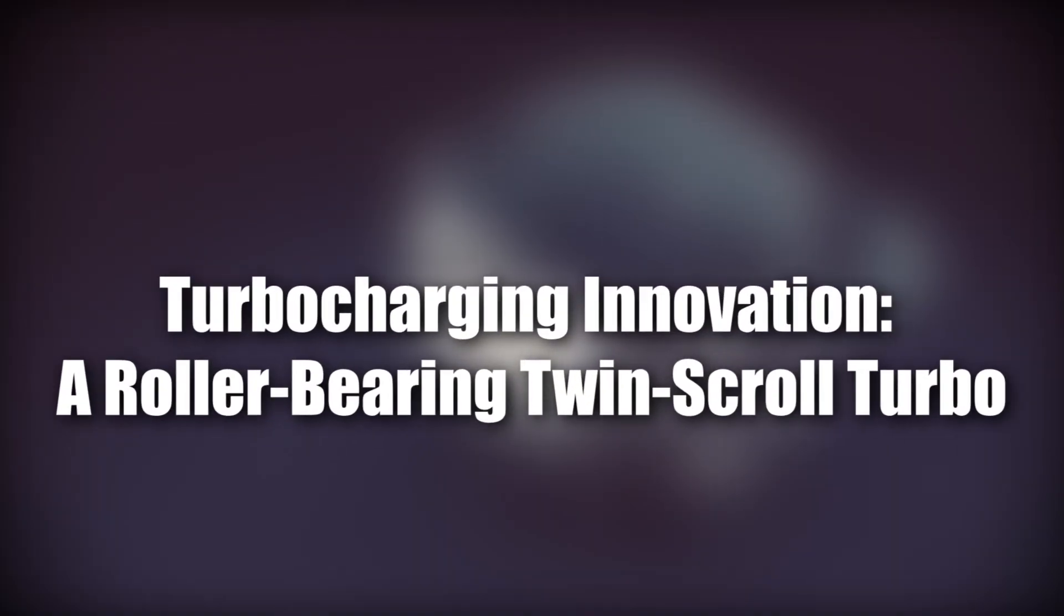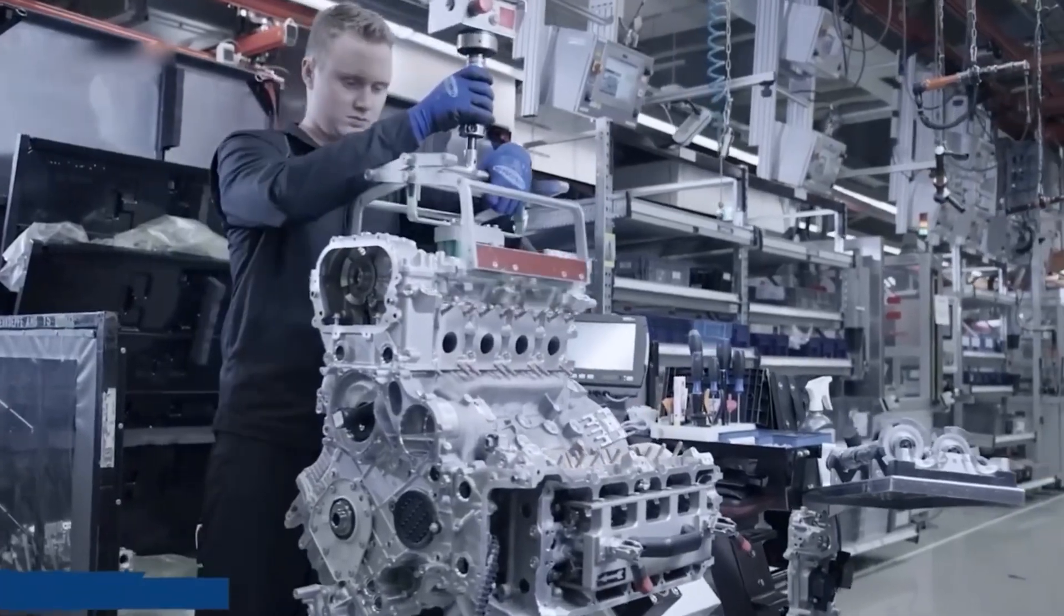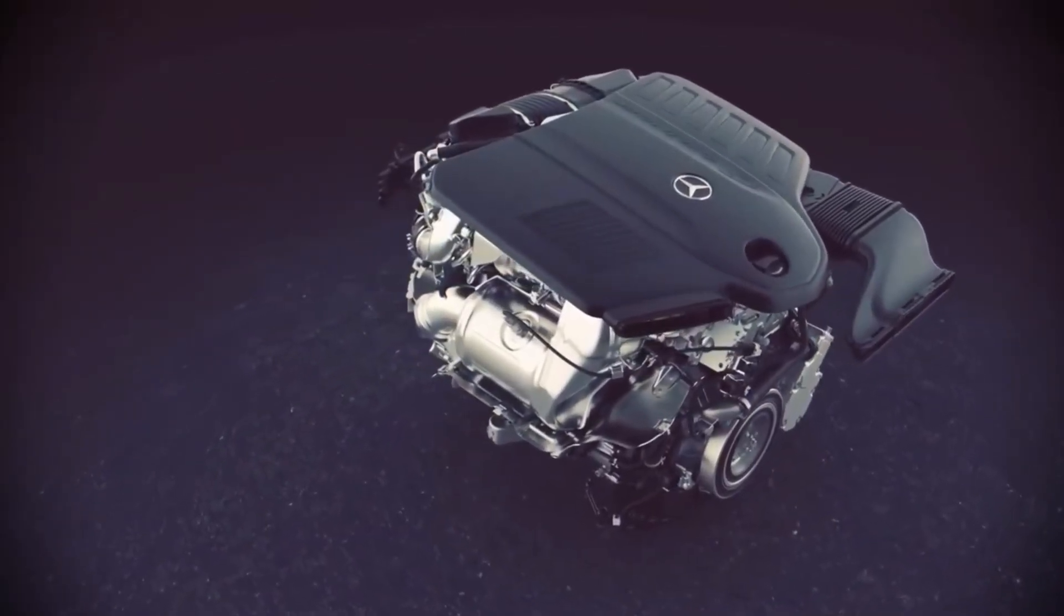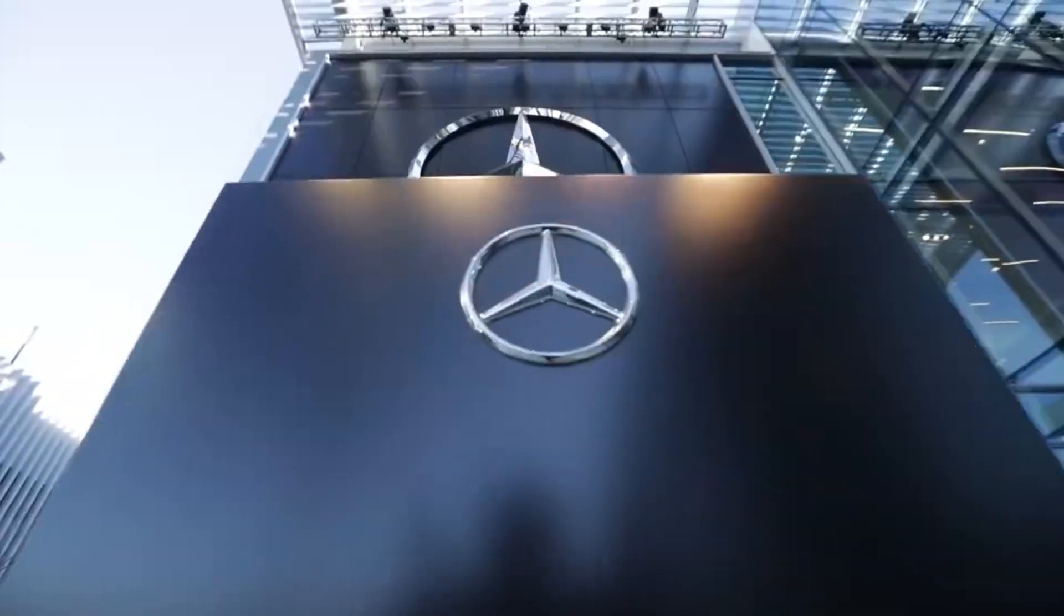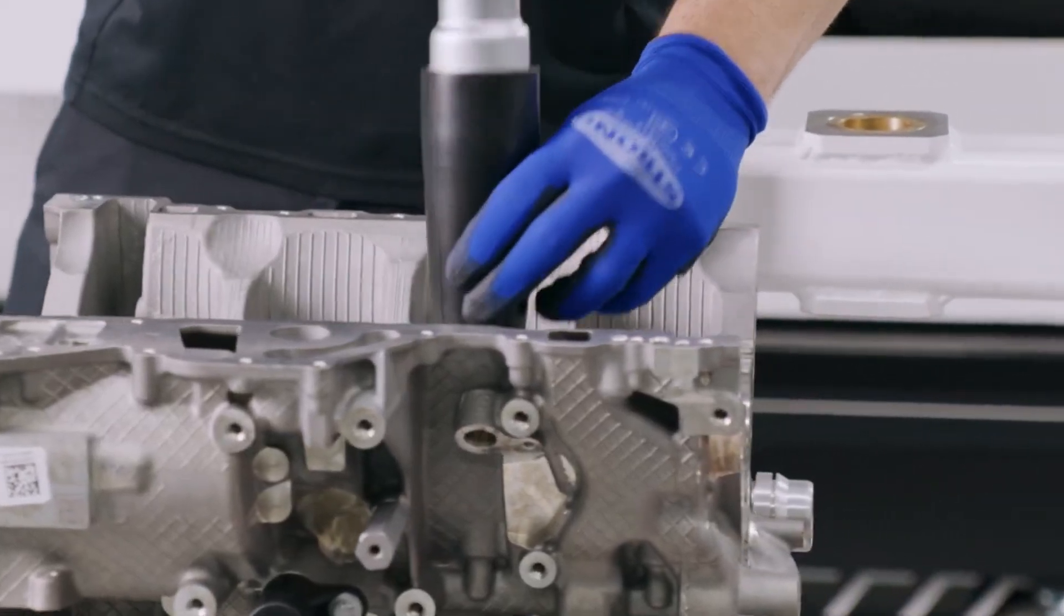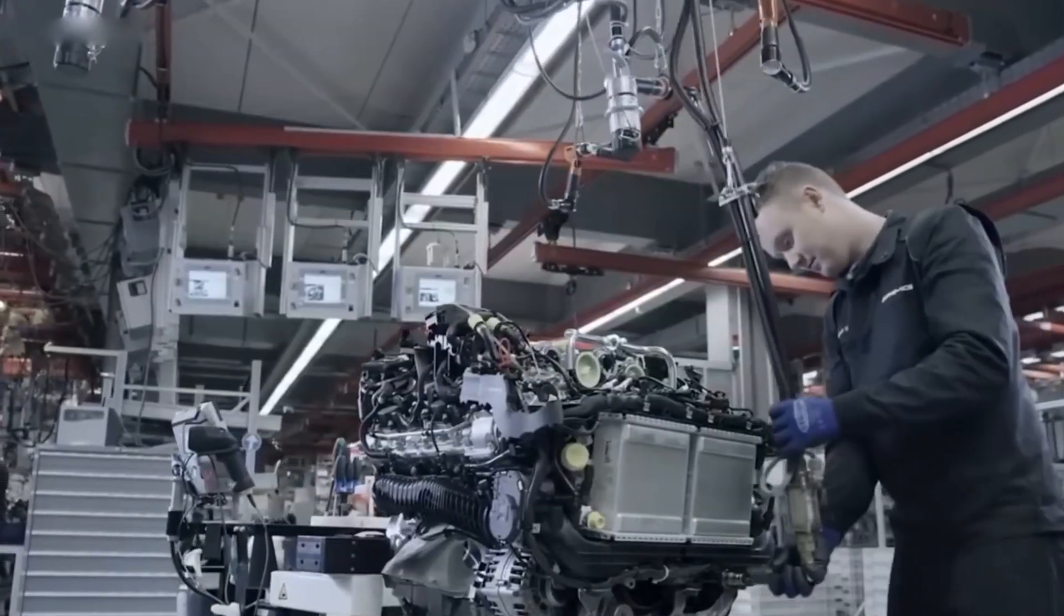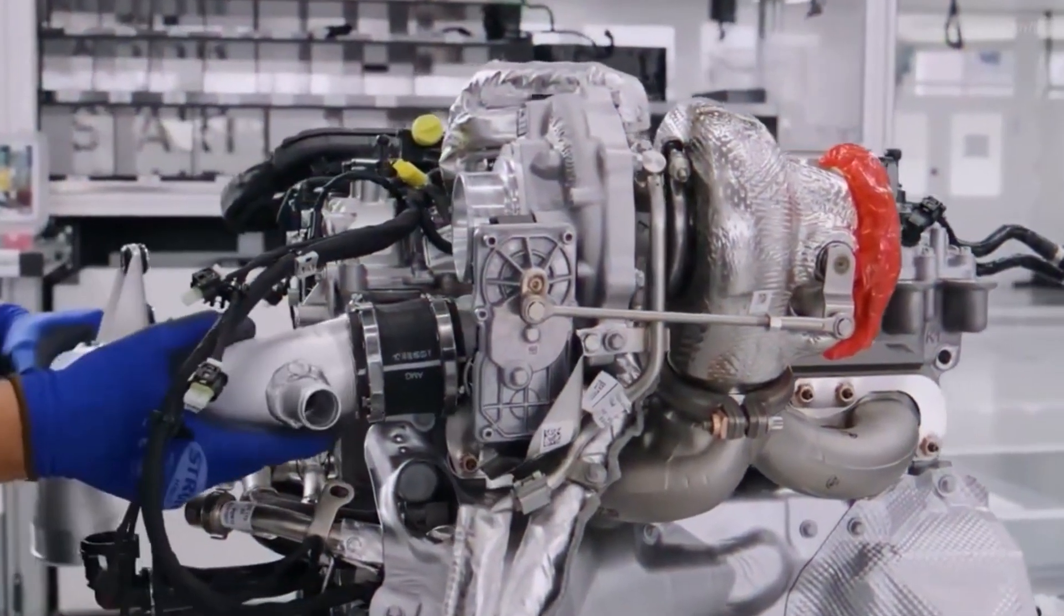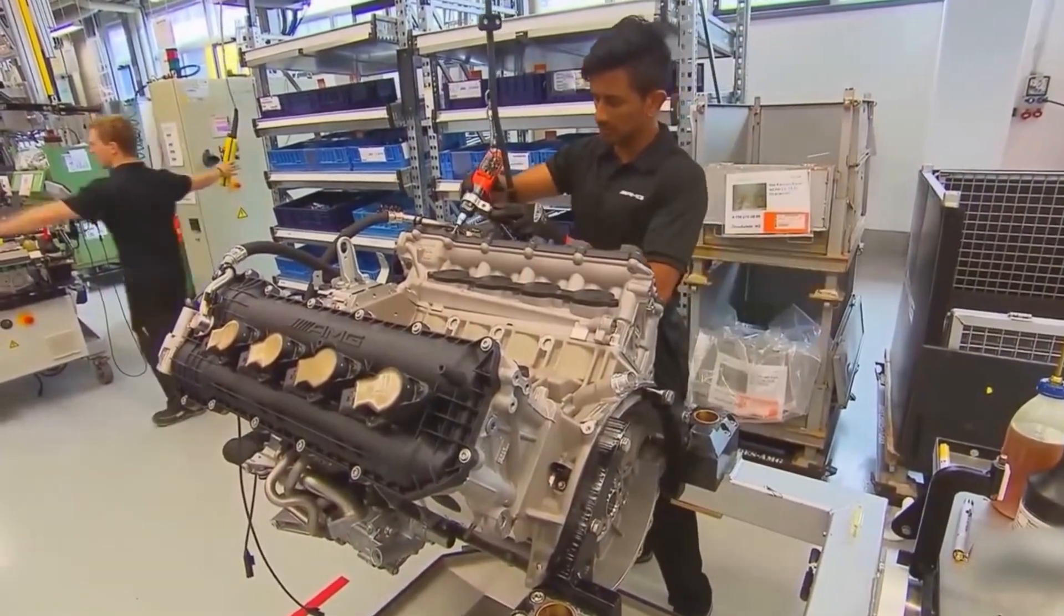The M139 engine features Mercedes' first roller-bearing twin-scroll turbocharger, which significantly reduces friction compared to traditional designs. This allows the turbo to spool faster, delivering impressive low-end torque and lightning-quick acceleration. The twin-scroll setup further optimizes performance by separating exhaust pulses to reduce back pressure. With a peak boost of 30.5 psi, this turbocharger doesn't just improve speed, it enhances efficiency, making the M139 a model of innovation in turbocharging technology and setting a new standard in engine responsiveness.